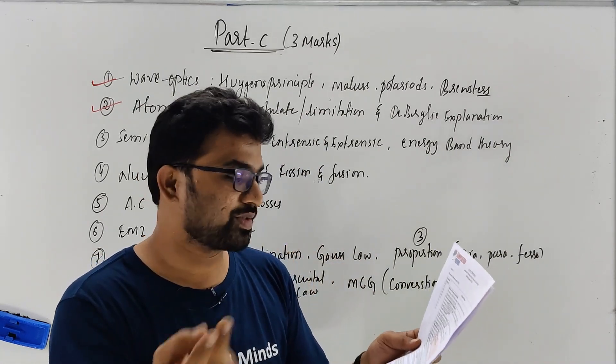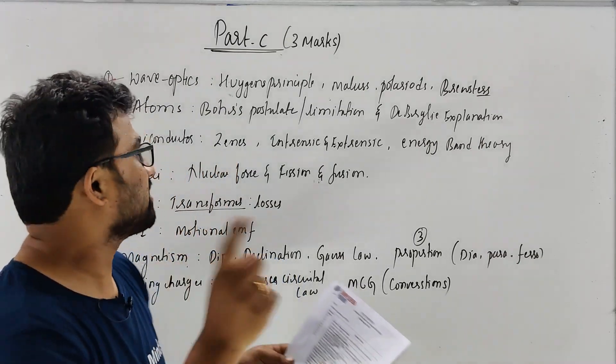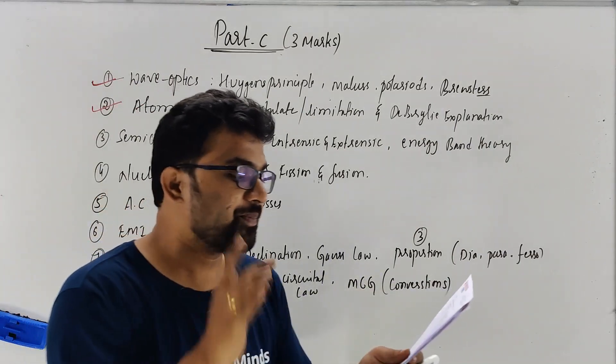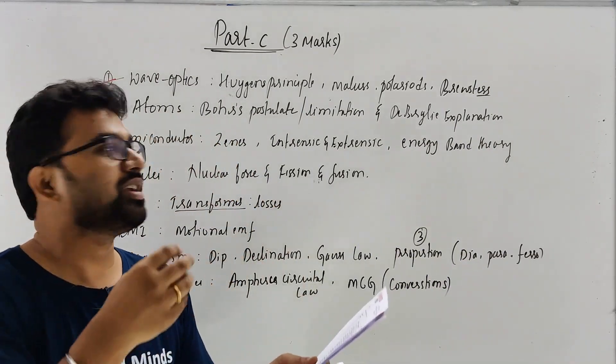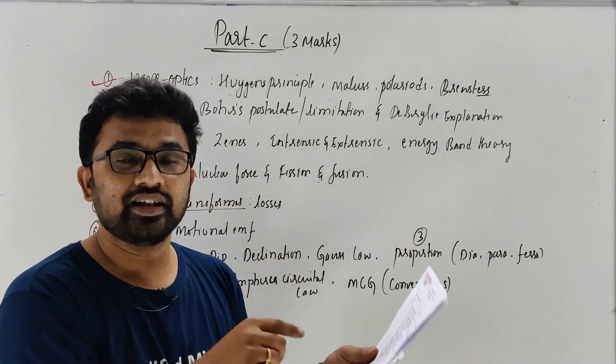And questions can come again. In there also one or two derivations, what to study? So I suggest you can go with atoms, semiconductor. So here three markers you can score full. For example, I suggest wave optics. Wave optics usually three marks. Mostly they will ask like Huygen's principle, Polaroid. And also good thing about the wave optics is that one marker, two markers...